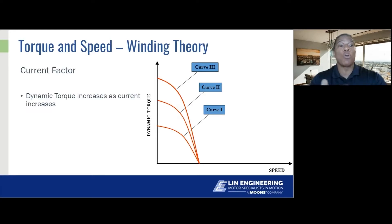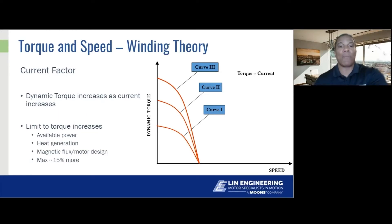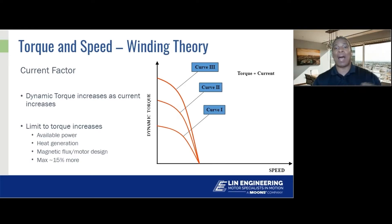So what adjustments can be made? The first is current. Torque is proportional to current. Here are three different curves for exactly the same motor — just with different current values, for instance one amp, two amps, and three amps. As you put more current into the motor, you get more torque, though there's a thermal limit. The curves drop off at higher speeds because as you commutate the motor faster, inductance prevents current from rising, so current eventually goes to zero and torque goes to zero. As a rule, torque is always proportional to current.